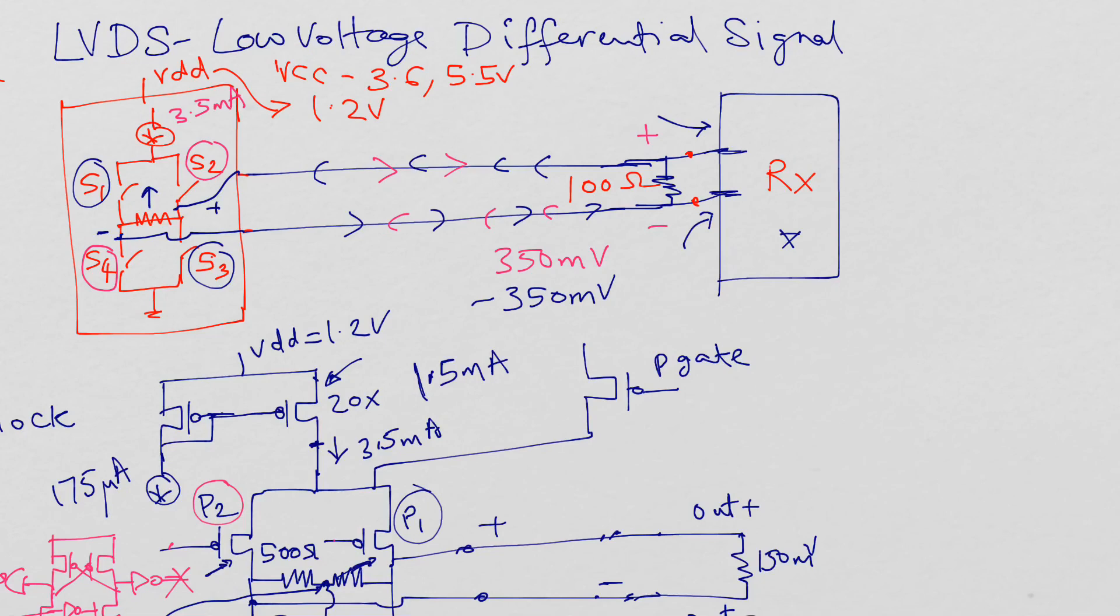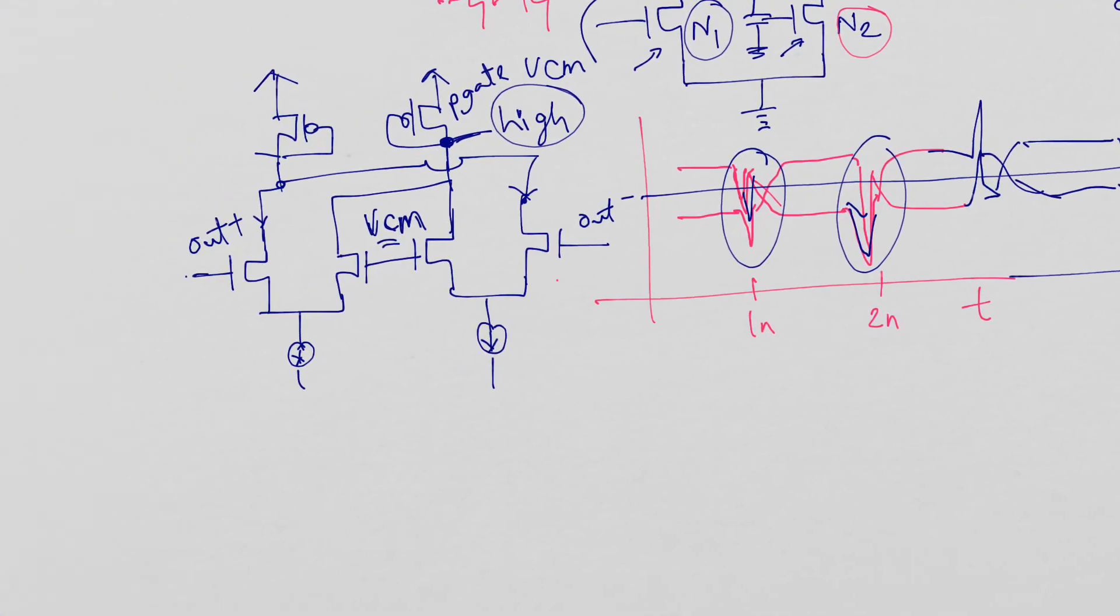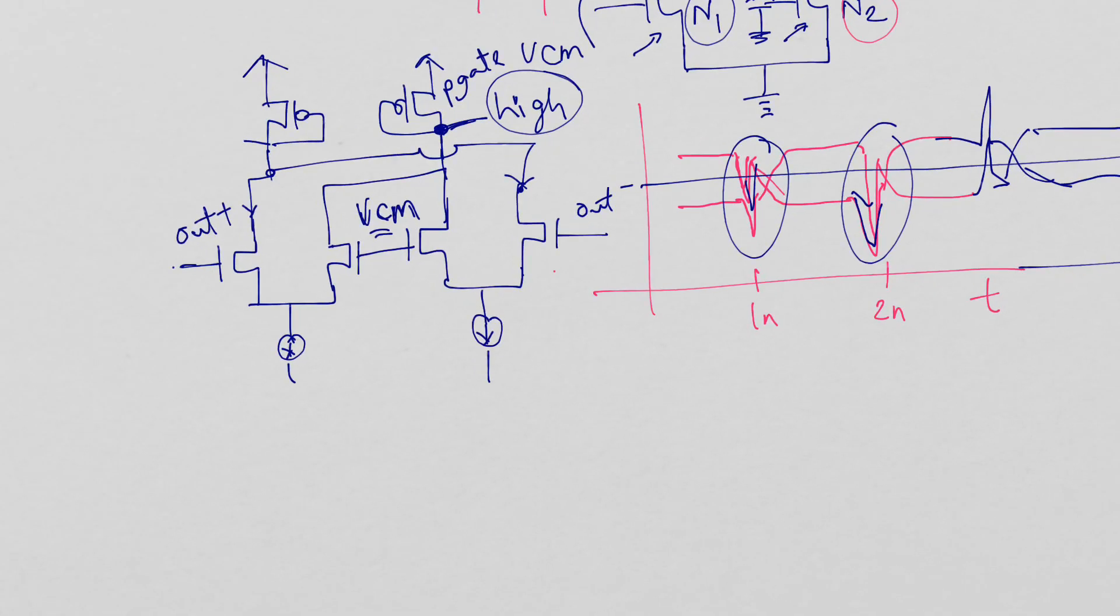I know the input buffer will be more like a sense amplifier. You could have a differential pair receiving those two signals and then you could amplify that. It's basically the out plus and out minus, and then you could further amplify this. Or sometimes you could even have cross couple, but most likely it will be this arrangement for the input buffer or the receiving end.